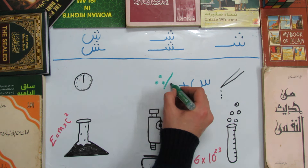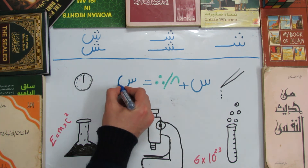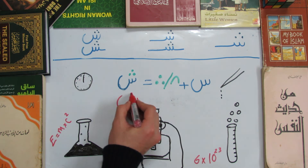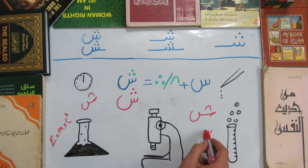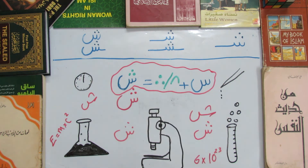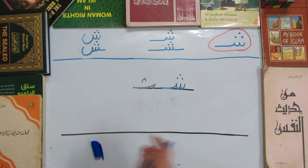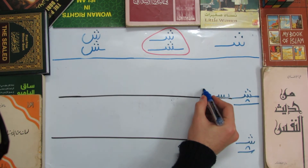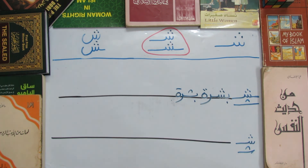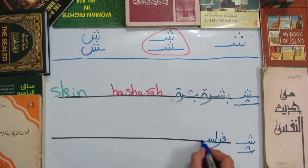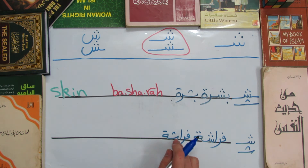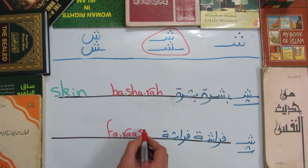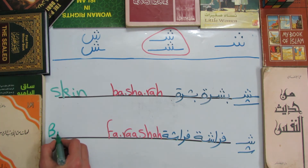Now let's move to sheen. For sheen, I won't repeat everything again because sheen results from adding three dots or a tint to seen. For sheen at the beginning of the word, we have Shems, meaning 'sun.' In the middle of the word we have Beshara, meaning 'skin.' An example of the other middle form is Farasha, meaning 'butterfly.'